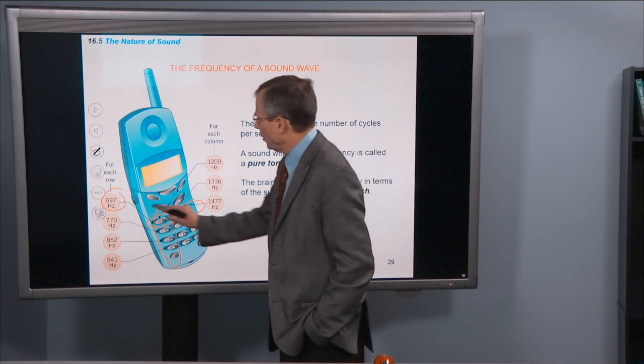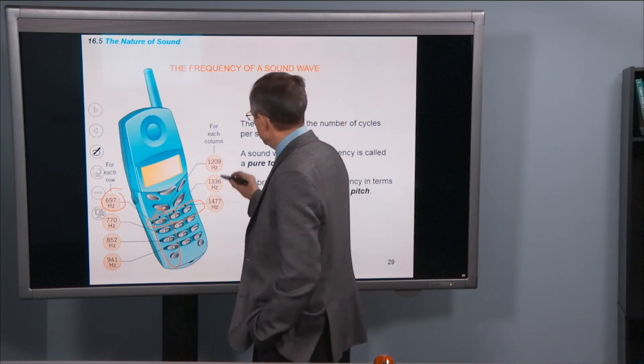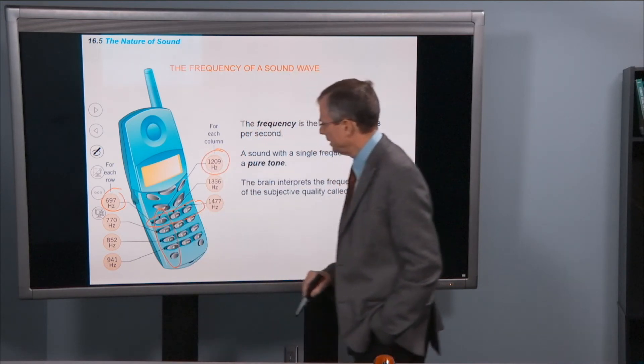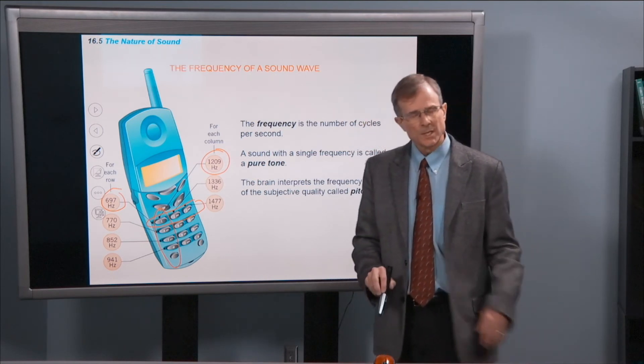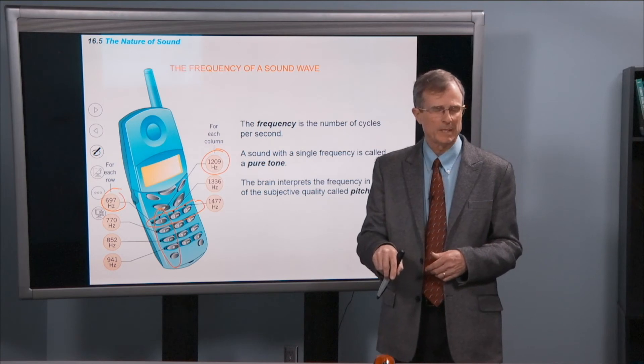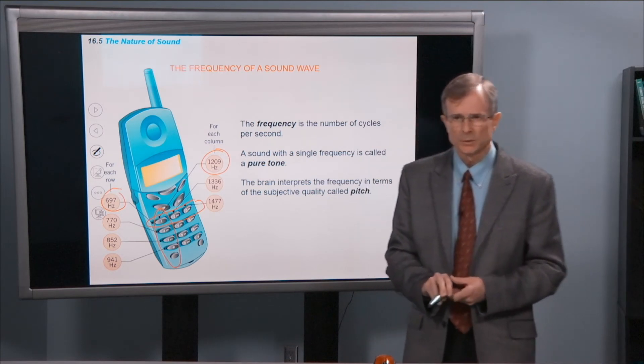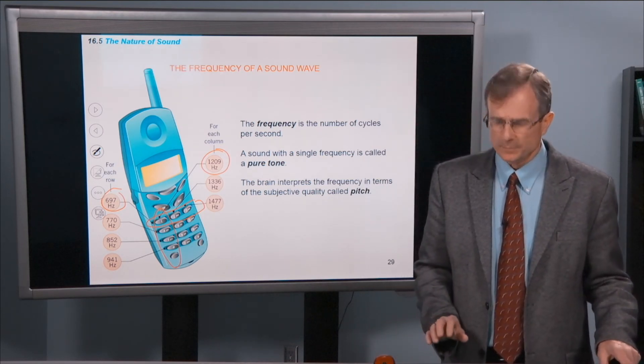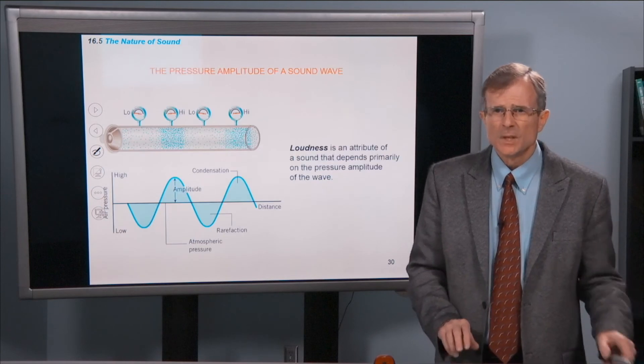So this row has a tone of 697 hertz. This column has a tone of 1209 hertz. That's why you hear two tones at each instant when you push those buttons. It's always two different tones.